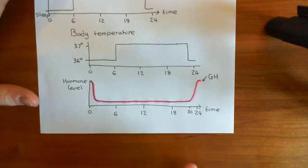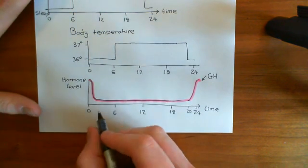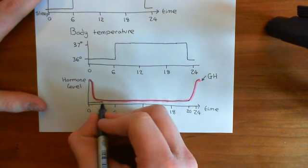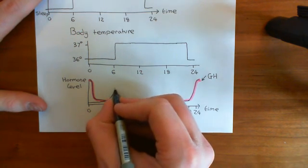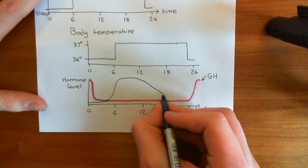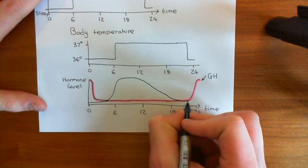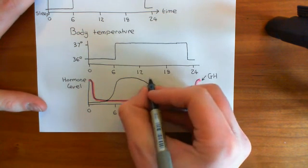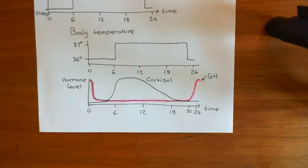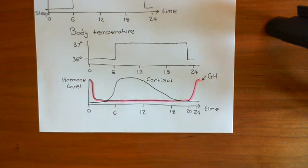Cortisol also shows a circadian rhythm in blood level. It goes up as you are awake — low whilst you're asleep, then as you're getting ready to wake up at around 6 o'clock it goes up, stays high for the morning, gradually tails off, and in the evening goes down getting ready for sleep. All of these physiological things show this circadian rhythm — you can measure many different physiological parameters and find they vary on a 24-hour cycle.